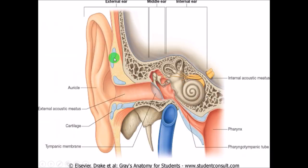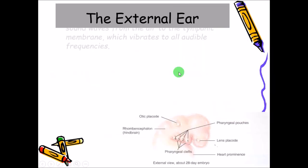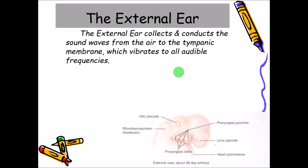Here you can see the auricle or the pinna, as well as the external acoustic meatus; together these form the external ear. Then we have the middle ear and this is the internal ear. The external ear is a very important structure for the collection as well as the conduction of sound waves.